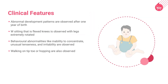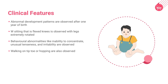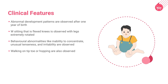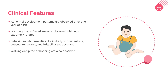Abnormal developmental patterns are observed after one year of birth. W-sitting is observed in the child with flexed knees and rotated legs. Behavioral abnormalities like inability to concentrate, unusual tenseness, and irritability are observed. Walking on tiptoe or hopping is also observed.